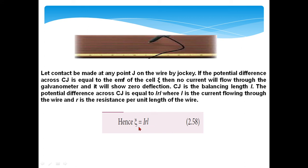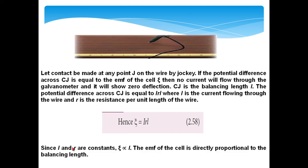Since i and R are constants, the EMF psi is directly proportional to the balancing length l. This is the principle of the potentiometer: the EMF of the cell is directly proportional to the balancing length. This is a very important point to remember.